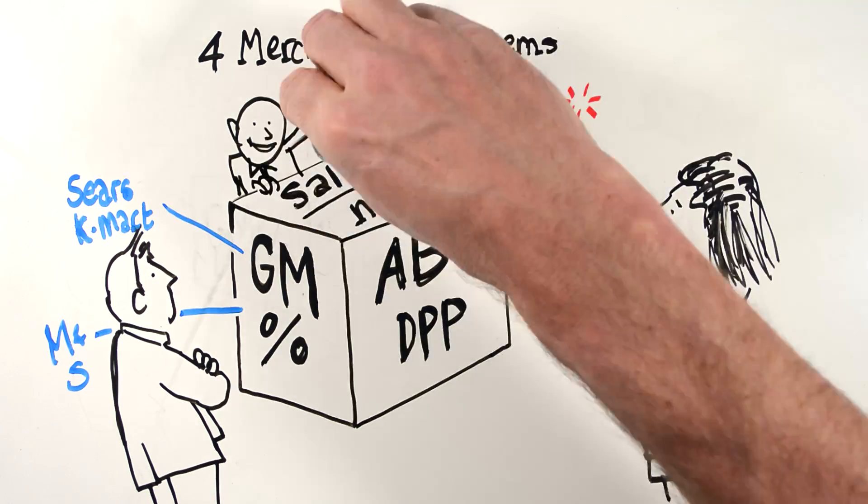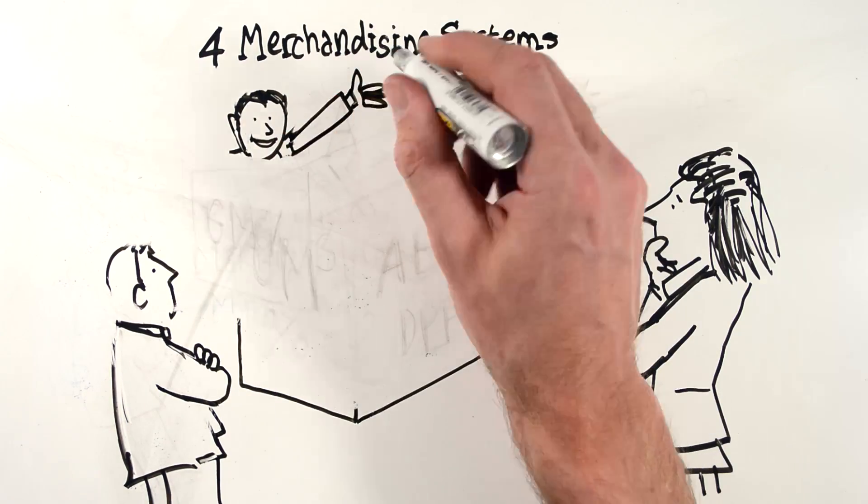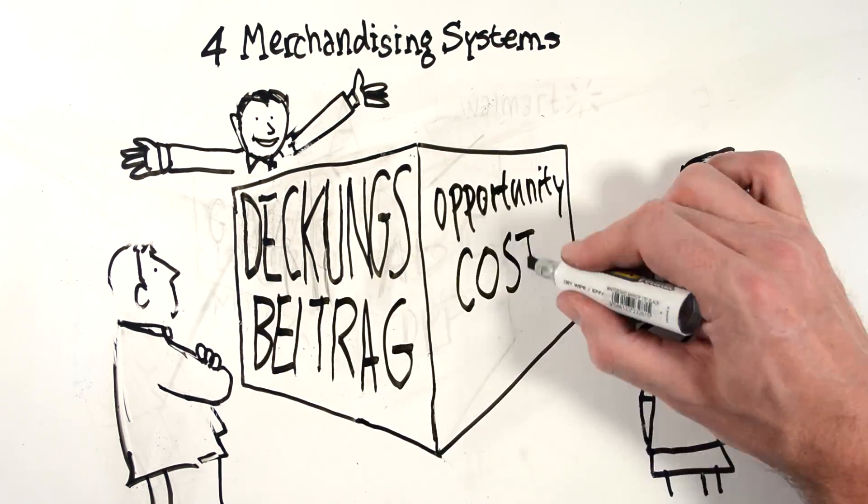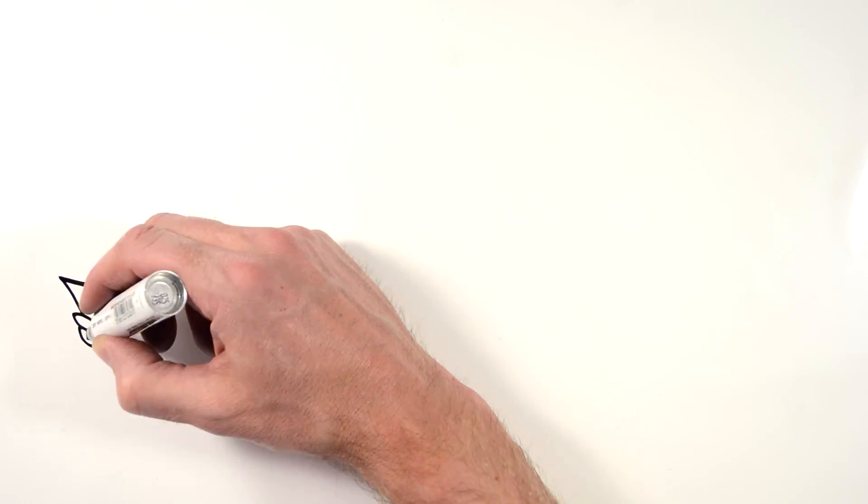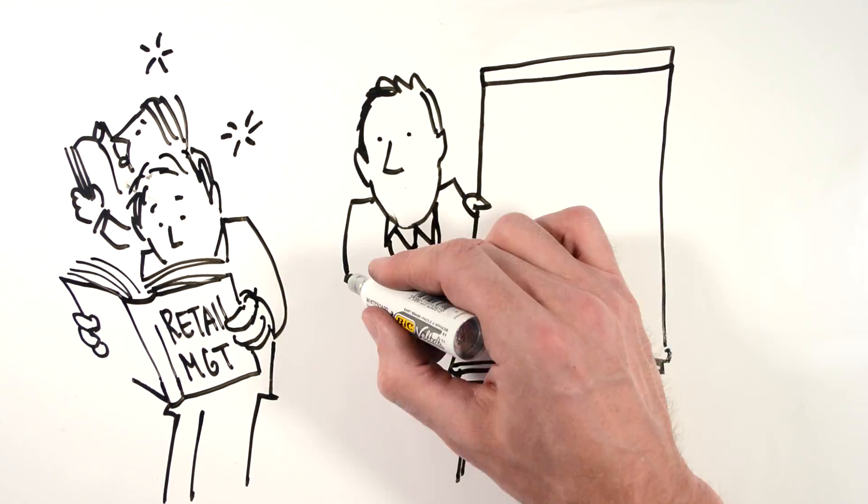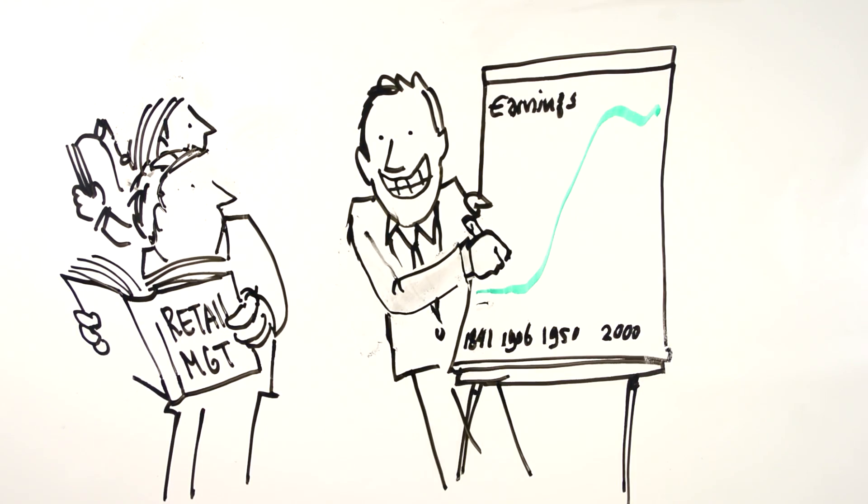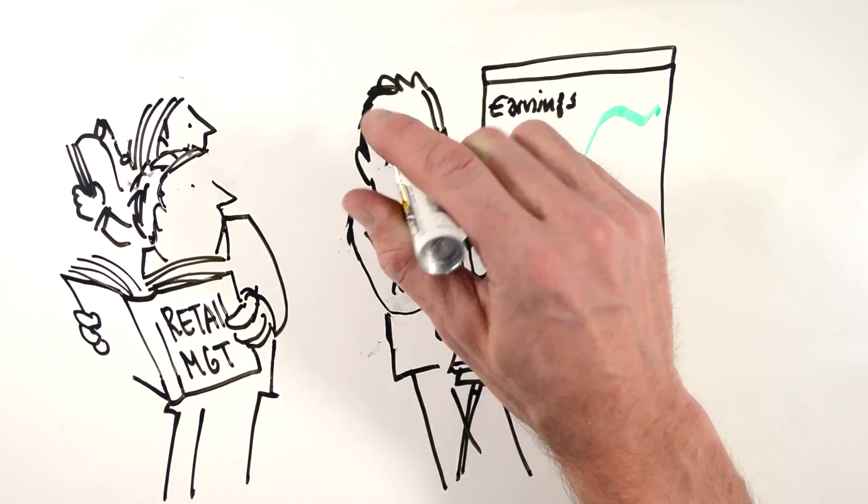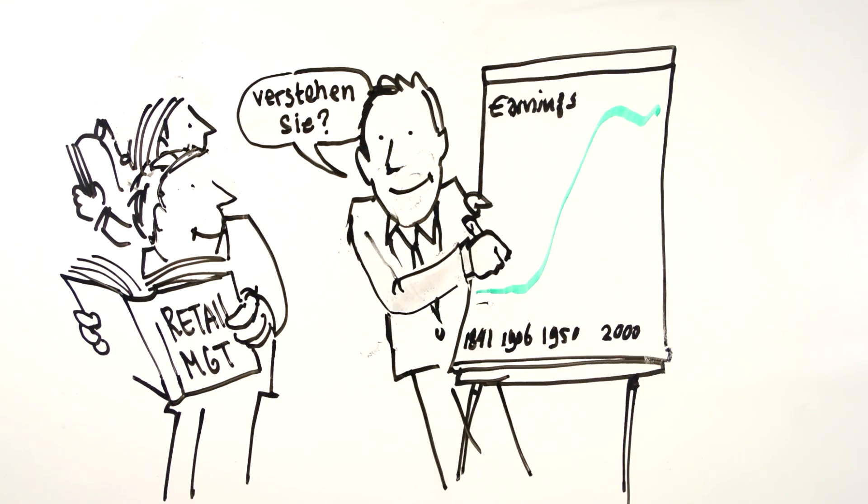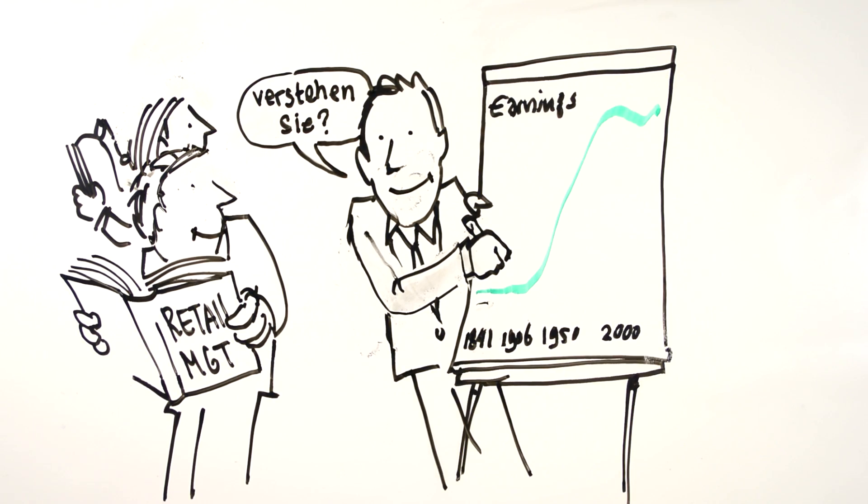In this video, you'll learn about a fourth system from Germany called dekkungsbeitrag and opportunity costs. You won't find this in English-language retail textbooks. CNA used dekkungsbeitrag from 1906 until management at CNA stopped speaking German and dekkungsbeitrag was lost in translation.